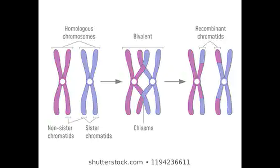The result of recombination in meiosis 1 is that chromosomes now have genetic sequences from both parents, creating genetic variations in your gametes. Together, recombination and mutations provide the raw substrate for the mechanisms of evolution to act on, producing the suite of biodiversity that exists today. Thanks for watching, and I'll see you next time.